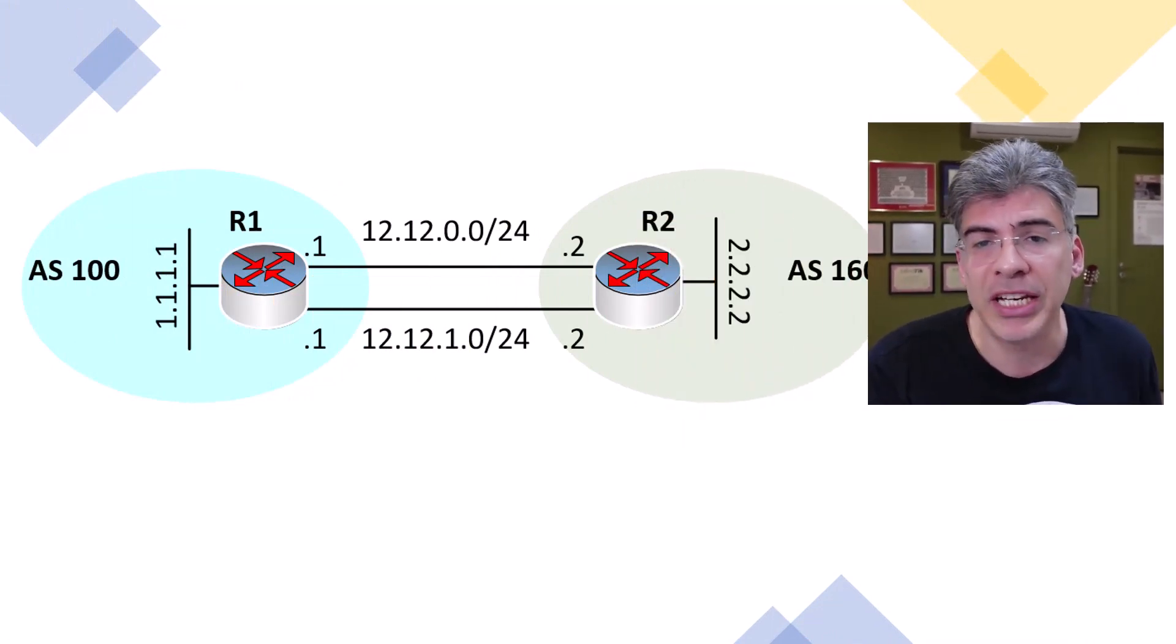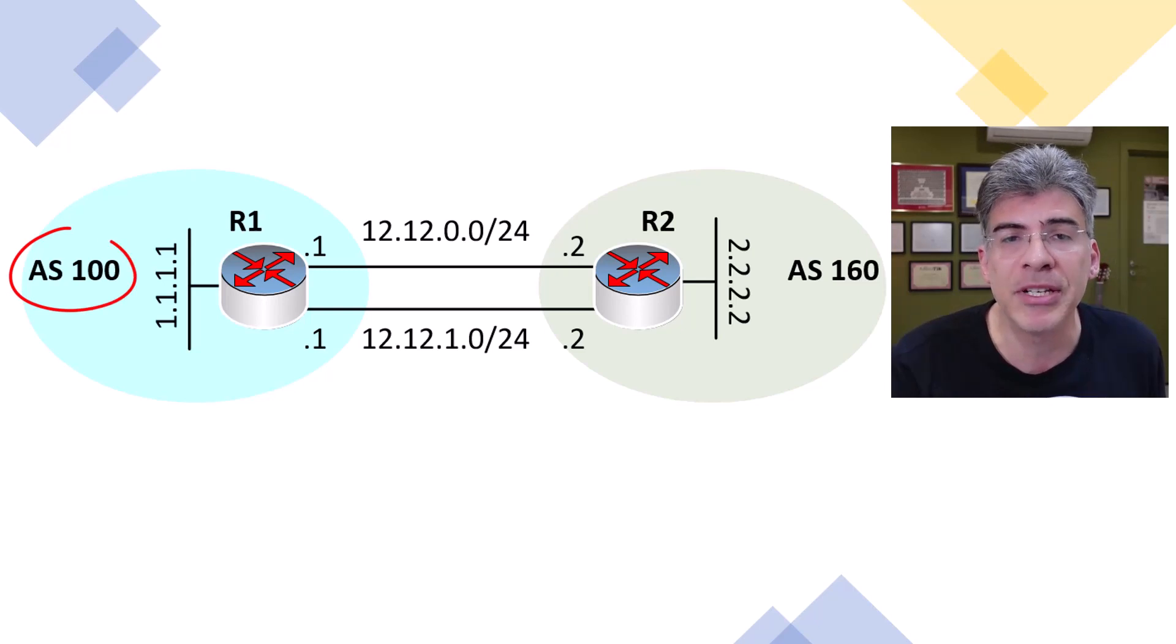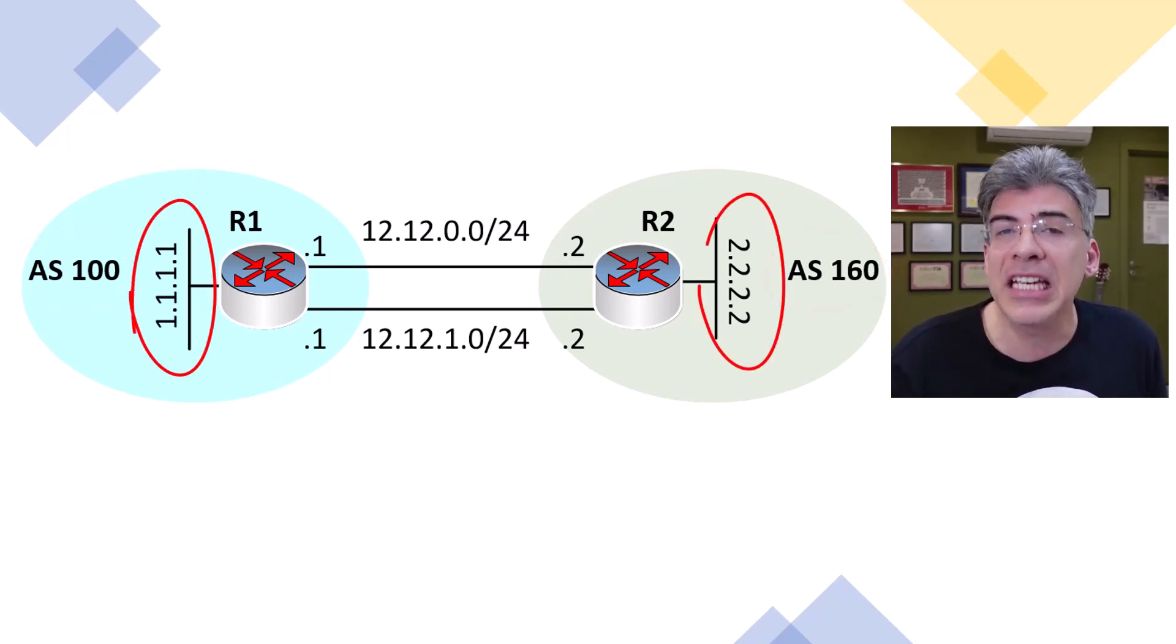And the topology that we'll be using to explain it is this one here. Here we have two EBGP peers, and we can see that they are EBGP peers because they each exist within a different autonomous system. These two routers actually have two physical links between them, and they're also configured with a loopback interface each.